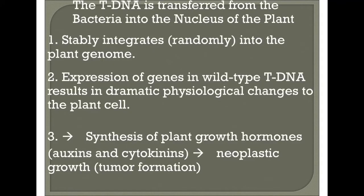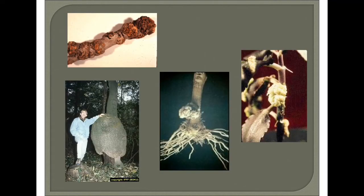The T-DNA is transferred from the bacteria into the nucleus of the plant and stably integrates into the plant genome. Expression of genes in wild-type T-DNA results in dramatic physiological changes to the plant cell, including synthesis of plant growth hormones like auxins and cytokinins, leading to tumor formation. This is the crown gall formation in dicotyledonous plants.